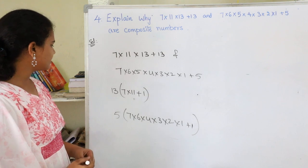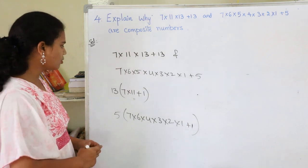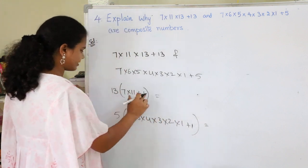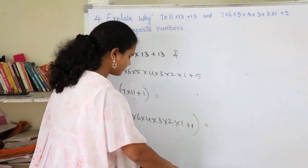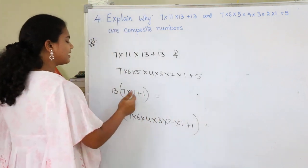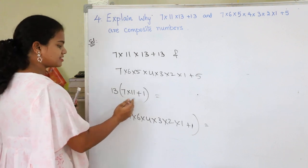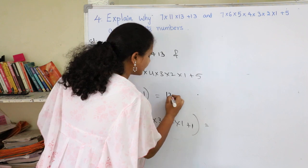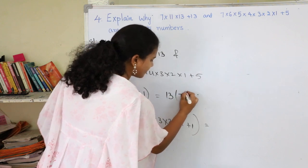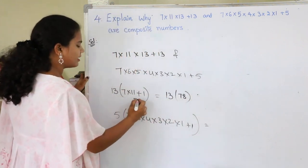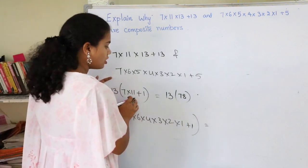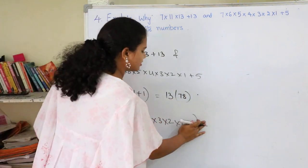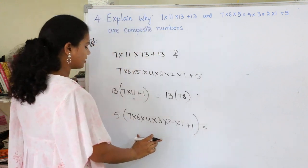Now let's solve the bracket problems. For the first bracket, 7 × 11 equals 77, and 77 + 1 equals 78. So we have 13 × 78, which equals 78 total.